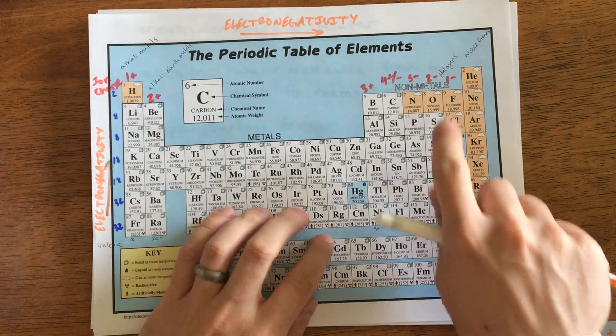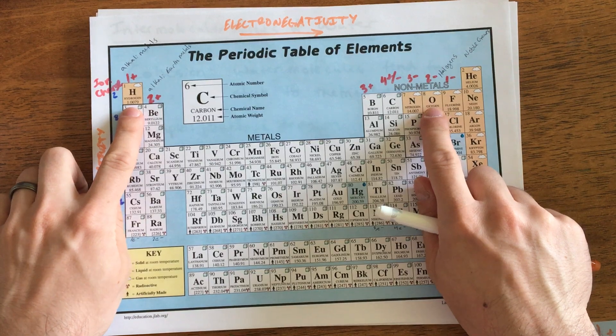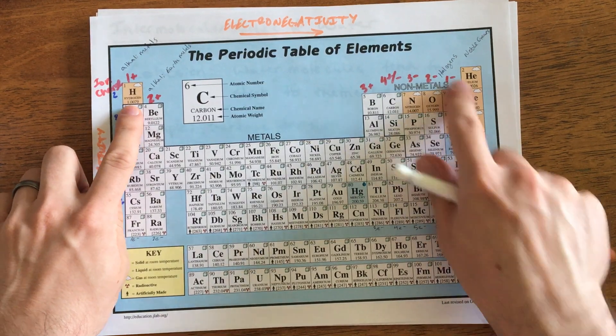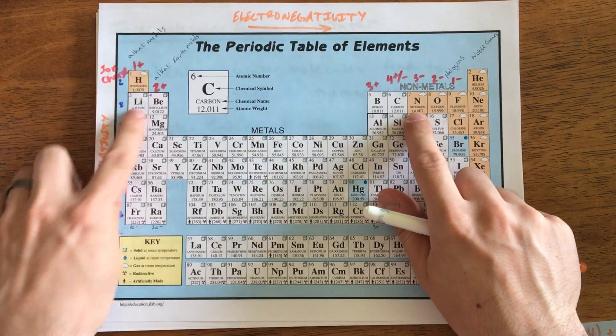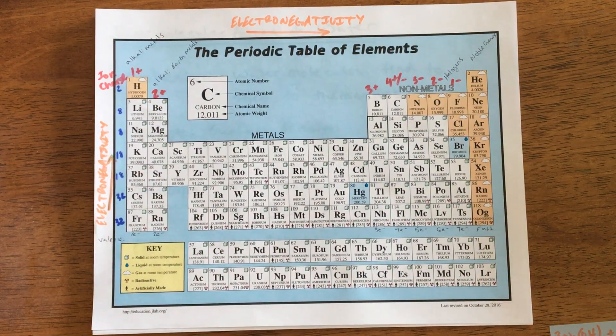Electronegativity increases up and across, which is why oxygen—since it's much further to the right on the table than hydrogen—is much more electronegative. When they're combined in water, the oxygen is a little bit negative and the hydrogen is a little bit positive because the oxygen is hanging on to the electrons a little bit more strongly than the hydrogen.